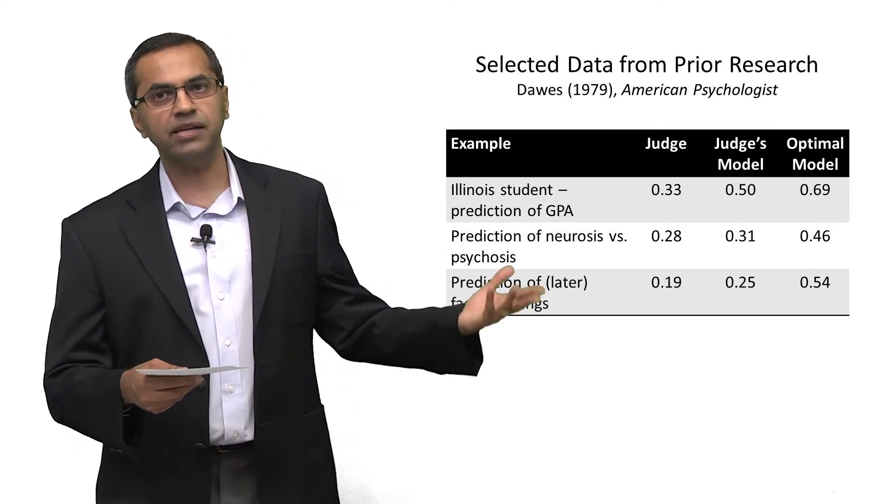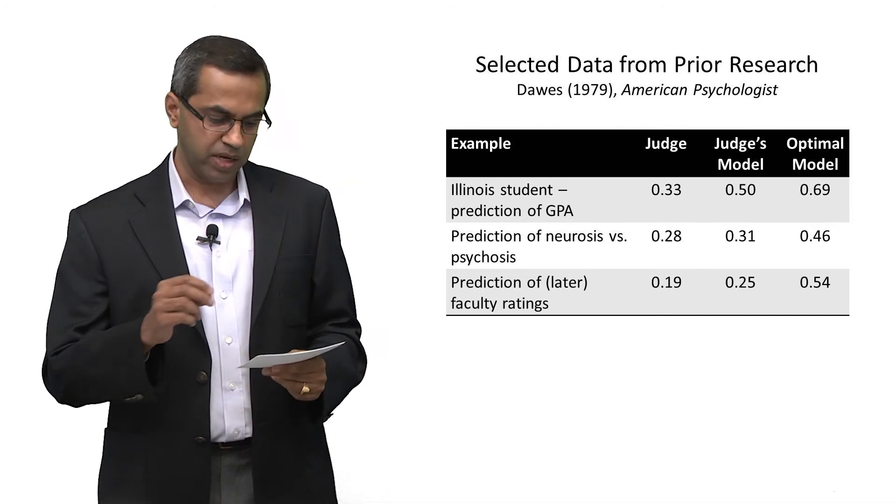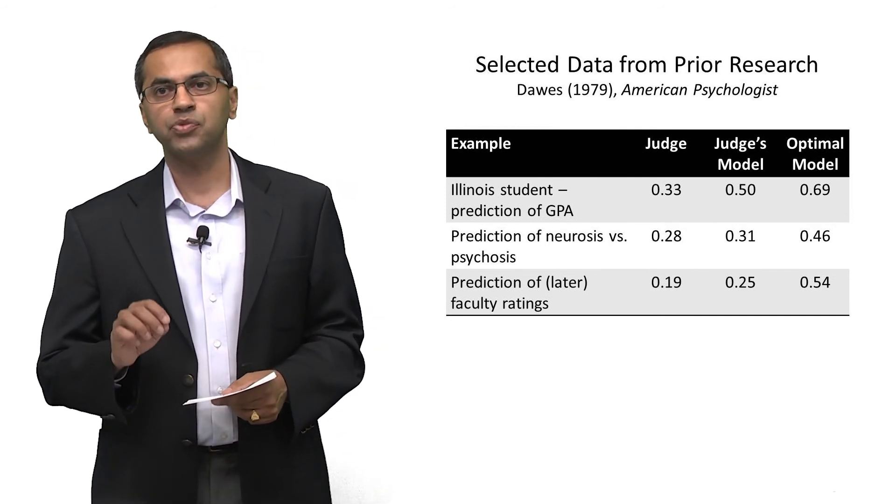Likewise, faculty ratings at a university in Oregon, the expert's correlation was 0.19, the model's correlation was 0.25.